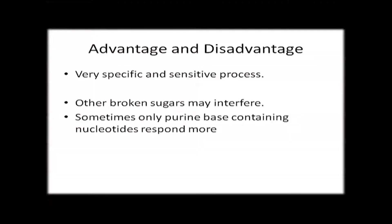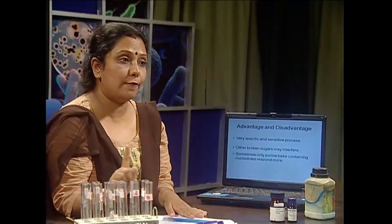There are advantages as well as disadvantages. Advantages include simplicity and specificity. But disadvantages again include that purine nucleotides are much more reactive than pyrimidine — but the problem can be nullified by using the same standard as well as unknown and treating them the same. We are also dealing with hazardous chemical acids, so you have to take care.